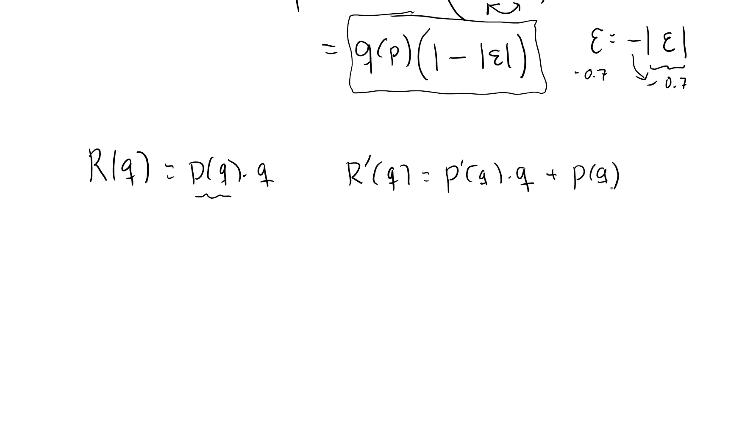The derivative of Q with respect to Q is one. Epsilon is dQ/dP times P over Q. If I do the inverse of both sides, I get one over epsilon equal to one over dQ/dP, or the derivative of the inverse demand function dP/dQ. The inverse of P over Q becomes Q over P.